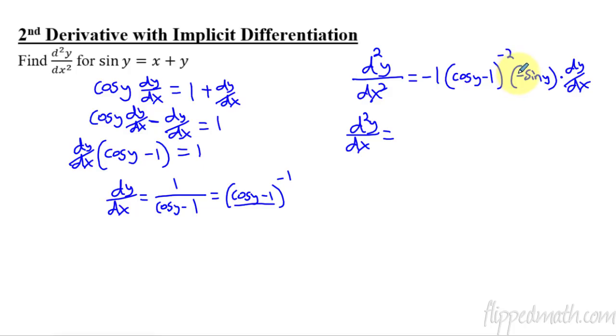So the negative and the negative, those just cancel. And so I'm going to have a sine y on top of a fraction. On bottom, I have cosine y minus one quantity squared. And then I have times dy dx. So now it is literally this is how all of these problems work for implicit differentiation. You always end up with a dy dx here in your second derivative. And when that happens, what do you do with it? That's where you do substitution. We know what dy dx equals, it equals this.